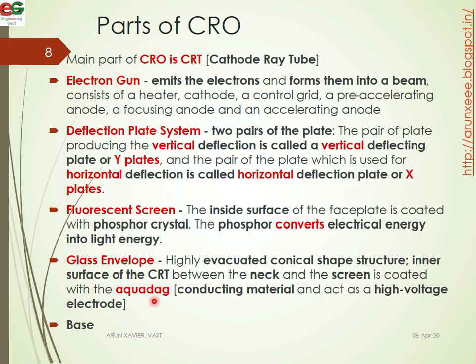The glass envelope is a highly evacuated conical-shaped structure. It is made of conducting material and acts as a high voltage electrode. The neck area is coated with a conducting coating between the neck and the screen. Finally, the base is the assembly that holds the structure together.